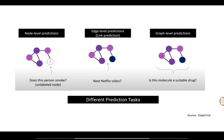We can also have edge-level prediction. In edge-level prediction, we want to know if there is a connection between two nodes. For example, if one node represents a person and surrounding nodes represent Netflix episodes, an edge between those two nodes would suggest that episode could be the next recommendation for that person — this is also called link prediction.